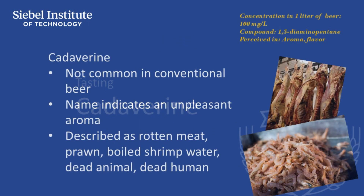Cadaverine is not commonly encountered as an aroma in beer, which is good as it is certainly considered an aroma defect. As the name suggests, it is sometimes likened to the aroma of a dead body, but the most common descriptors refer to decaying meat or shellfish. Cadaverine is one of several highly aromatic compounds produced in spoiled fish and meats.